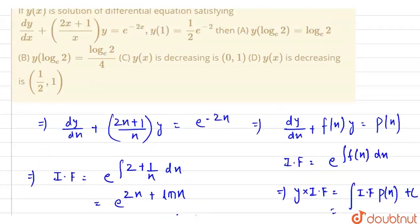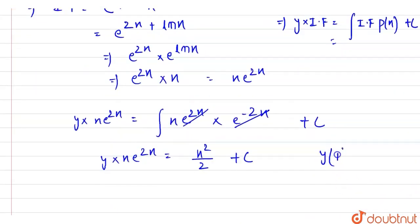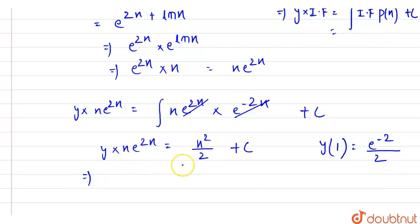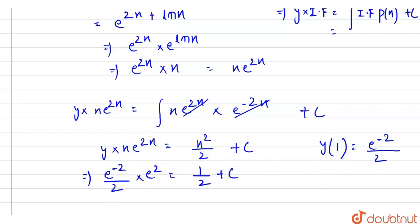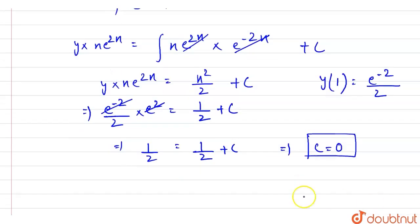Now for calculating c, we use the initial condition. We have been given that y(1) = e^(−2)/2. Substituting x = 1 and y = e^(−2)/2 into the equation, e^(2) cancels, and we get 1/2 = 1/2 + c. So from here, c = 0.